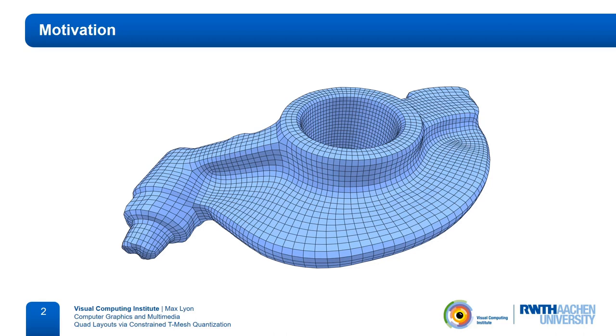The edge strips that connect singularities are called separatrices. Ideally, they form connections in a meaningful way, like this separatrix that connects the valence 5 vertex on the left with the valence 3 vertex on the right of the mesh.